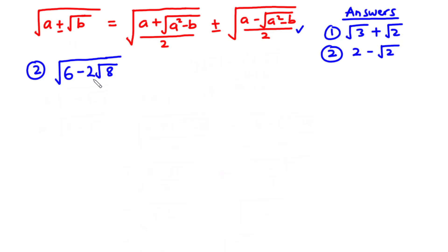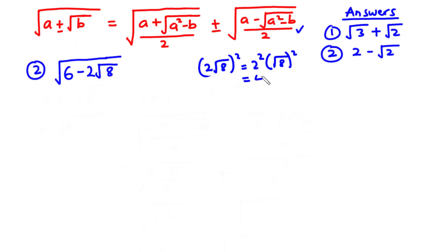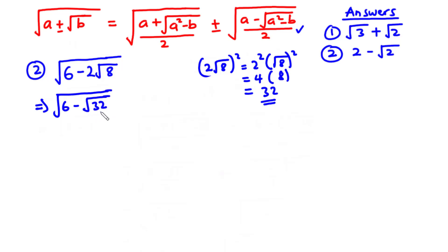Like in the first question, we need to express 2 root 8 in the form of root b. We can ignore the negative sign and focus on 2 root 8. Squaring it: (2 root 8) squared equals 2 squared times root 8 squared, which gives 4 times 8 equals 32. So the expression becomes the square root of 6 minus the square root of 32. From the question, a equals 6 and b equals 32.